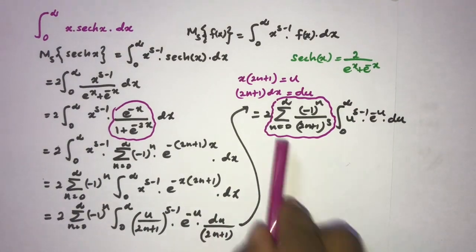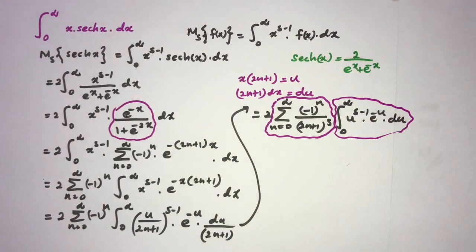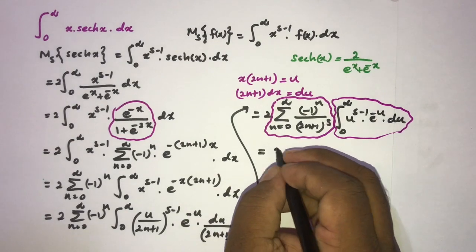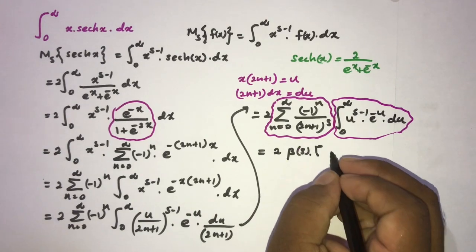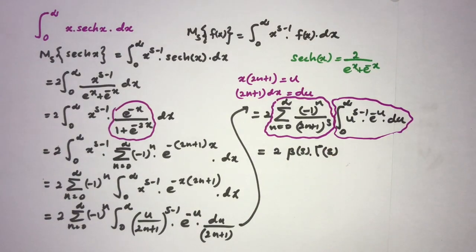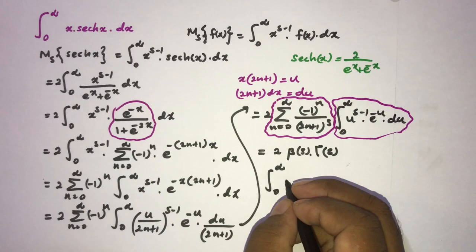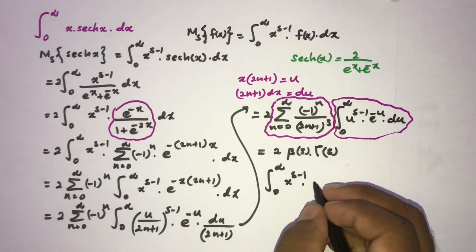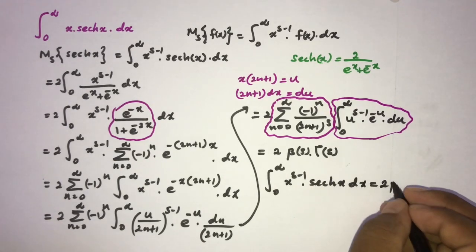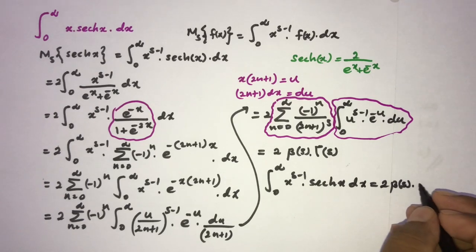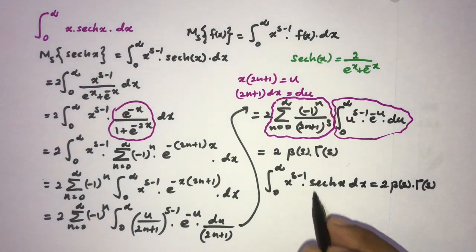This integral is the Gamma function, and the sum is the Dirichlet beta function. So we can write this as 2 times β(s) times Γ(s). Therefore, the Mellin transform of hyperbolic secant of x — that is, the integral from 0 to infinity of x^{s-1} sech(x) dx — equals 2 β(s) Γ(s).